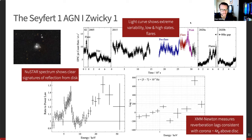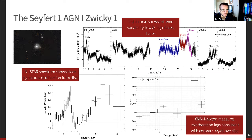We can measure the lag-versus-energy spectrum — just the average time delay of each energy band over the whole observation — and we can see the time delay of the iron K line above the continuum. The magnitude of this time delay tells us that we've got an X-ray emitting corona in 1H 0707-495 located around four gravitational radii above the accretion disk, where the gravitational radius is GM/c² for the mass of the black hole in question.